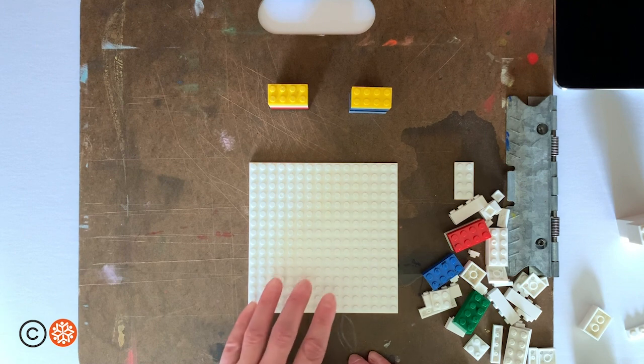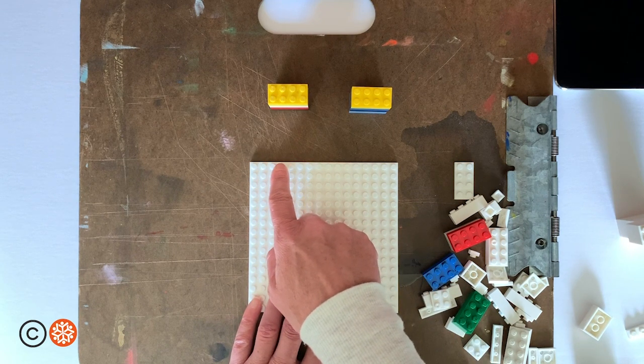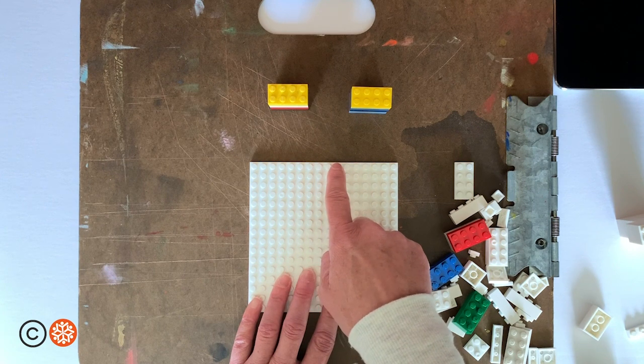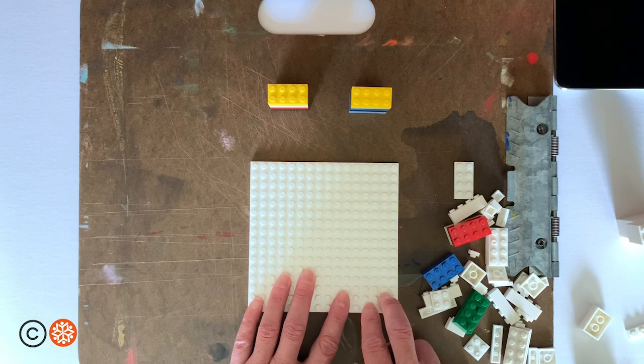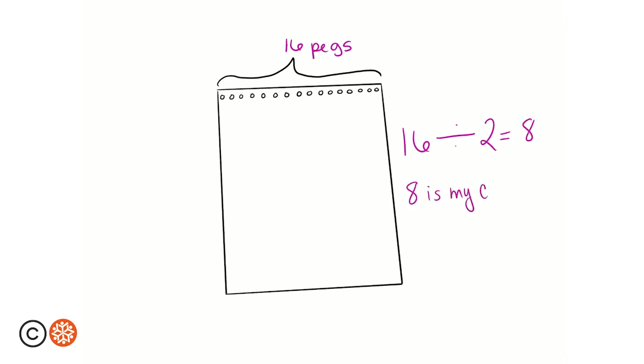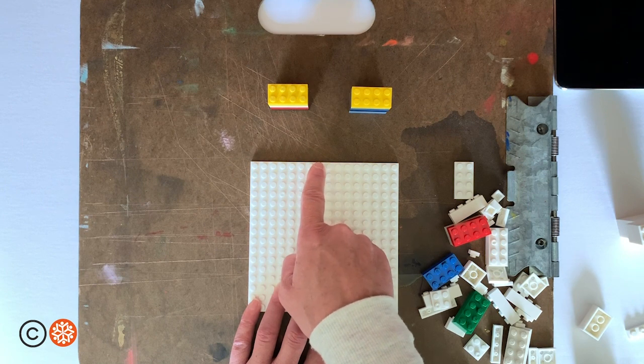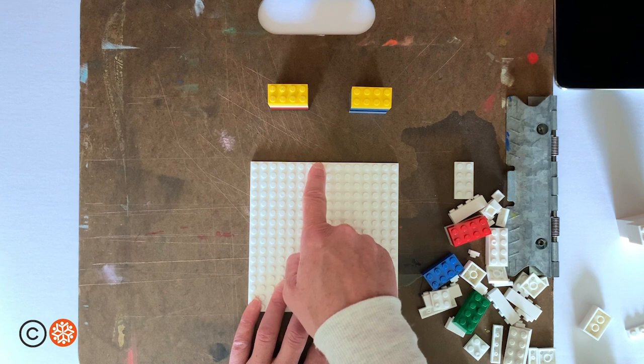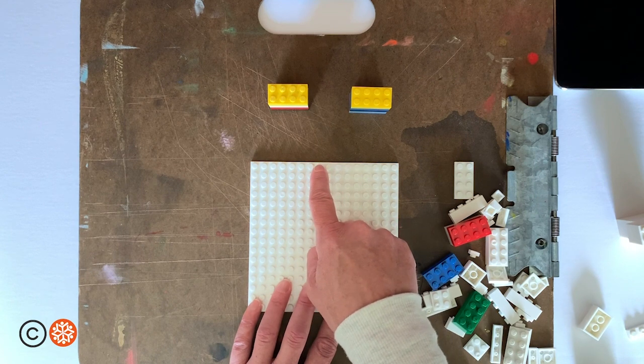For example, if I count out how many pegs I have on my base, 1, 2, 3, 4, 5, 6, 7, 8, 9, 10, 11, 12, 13, 14, 15, 16. I have 16 pegs on my base. Now, I need to figure out what the middle point is. Since it's an even number, I just divide 16 by 2 and I get 8. So if I count 1, 2, 3, 4, 5, 6, 7, 8 over, I know that that's going to be my middle point.